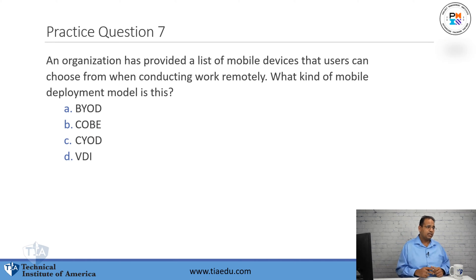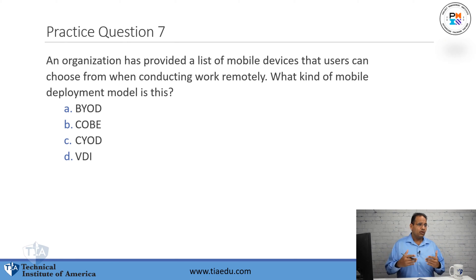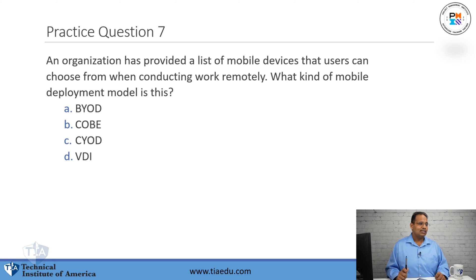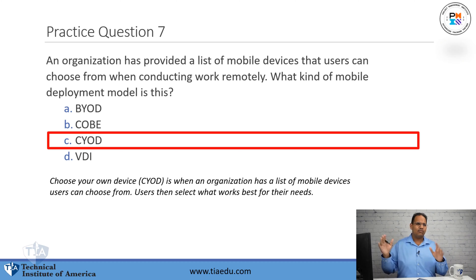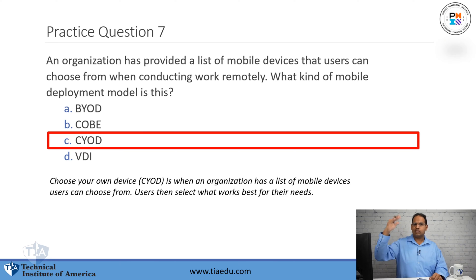Practice question seven: An organization has provided a list of mobile devices that users can choose from when conducting work remotely. What kind of mobile deployment model is this? A. BYOD. B. COPE. C. CYOD. D. VDI. The answer is CYOD. BYOD is when anyone can bring any device they want and join it to the network. In CYOD, the organization provides a list of supported devices and you must choose from that list.